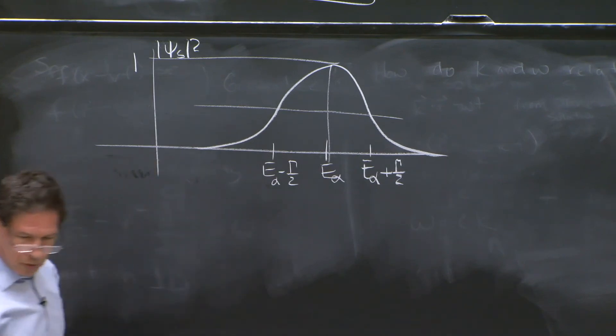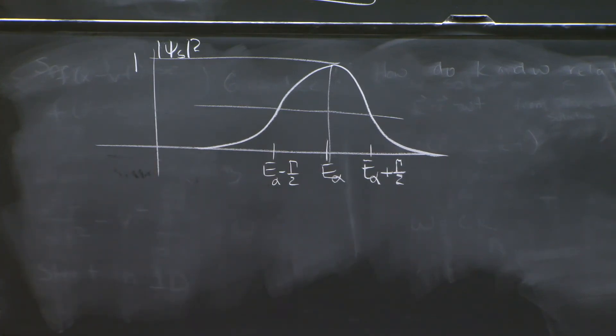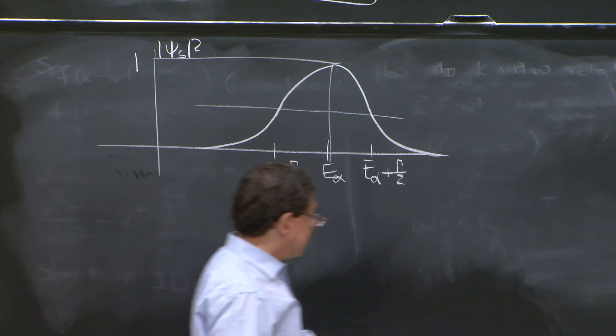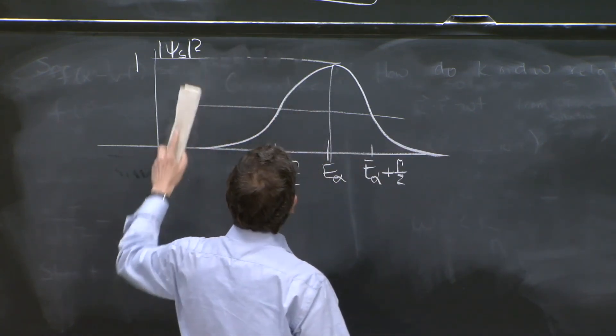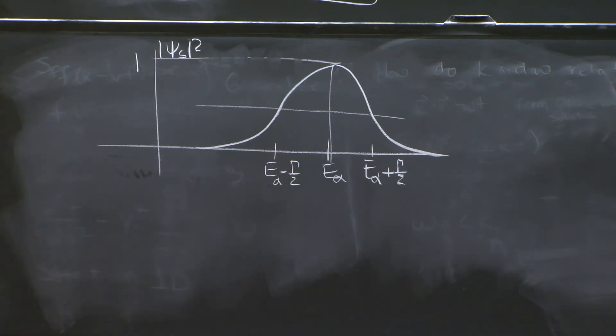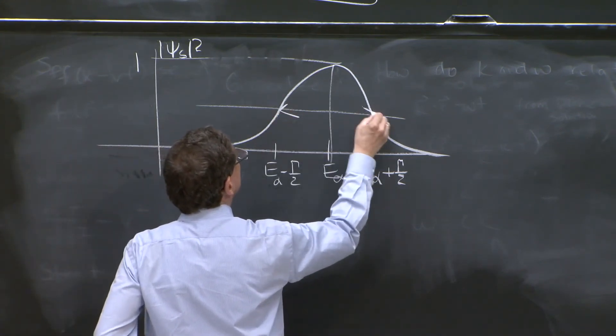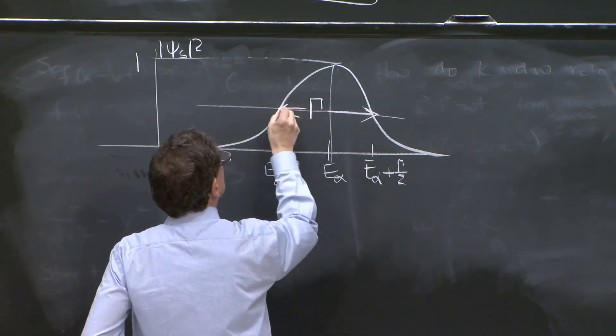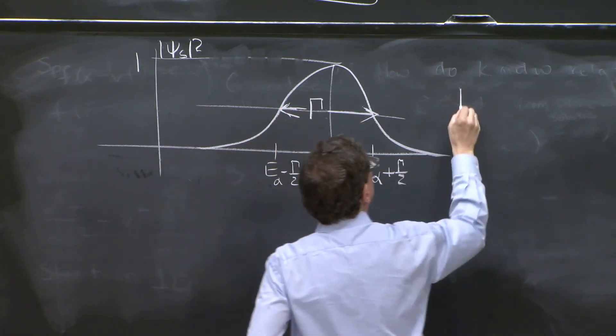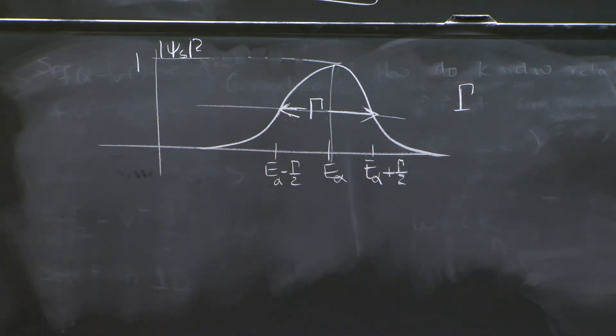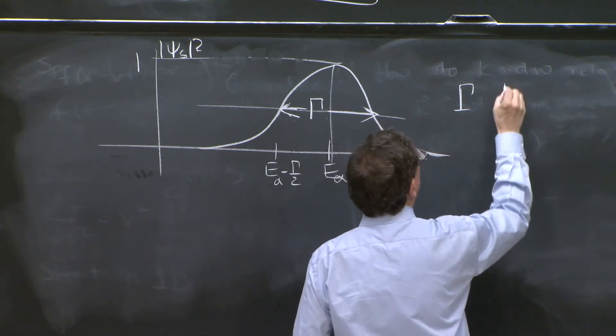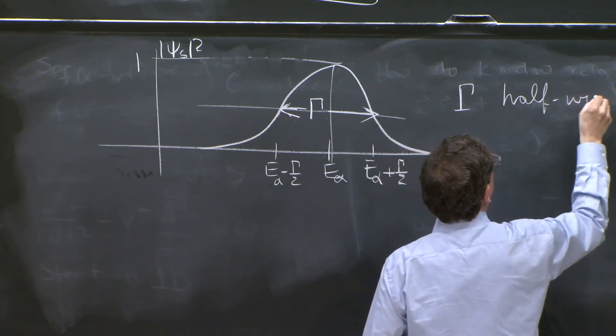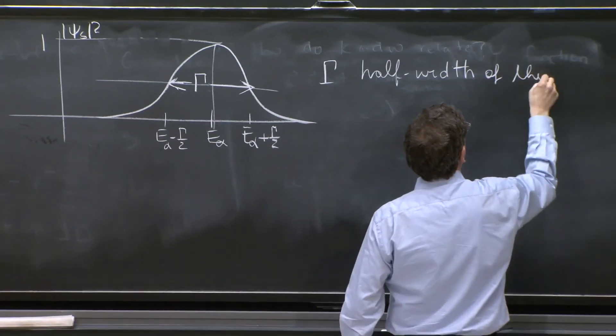So actually, I'm not sure the inflection point where it is. Probably not there. Or is it there? I don't know. I do it as if it is there. So that's the distribution. And the width over here is γ. So γ is called the width at half power or at half intensity. Yeah. Width. The half width. Half width of the distribution.